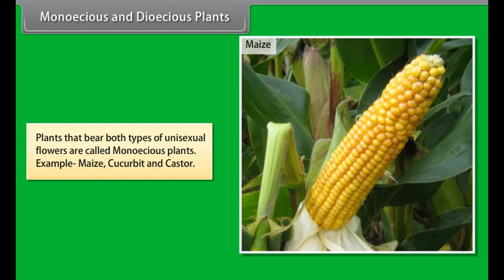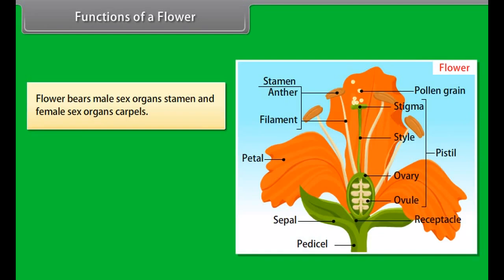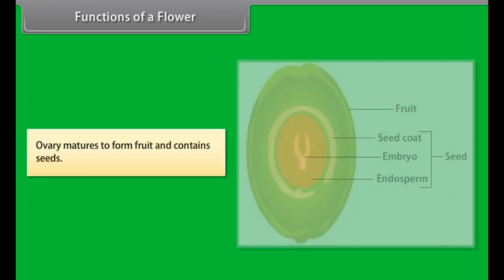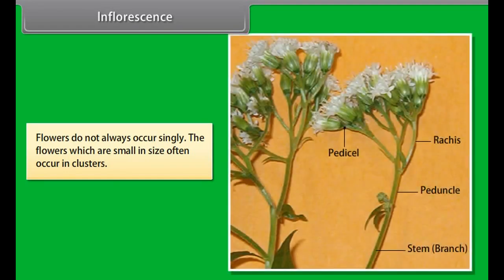Unisexual flowers bear either a stamen or a pistil. Examples include papaya and watermelon. Bisexual flowers contain both stamen and pistil and are also termed hermaphrodite. Examples include pea, hibiscus, and mustard.